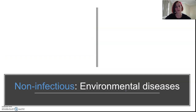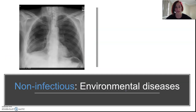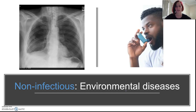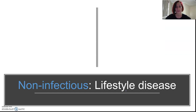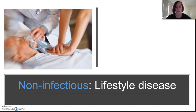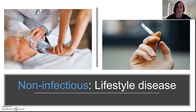Environmental diseases are caused by factors in a person's environment — for example, mesothelioma, which is what happens when you inhale asbestos fibers that get stuck in your lungs, and asthma, which can be triggered by exposure to airborne particles. Lifestyle diseases are a little different because they're about the choices someone has made — heart disease, type 2 diabetes, poor diet, lack of exercise, and smoking.